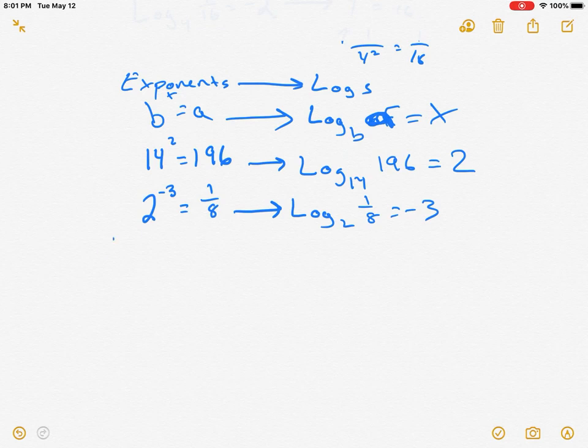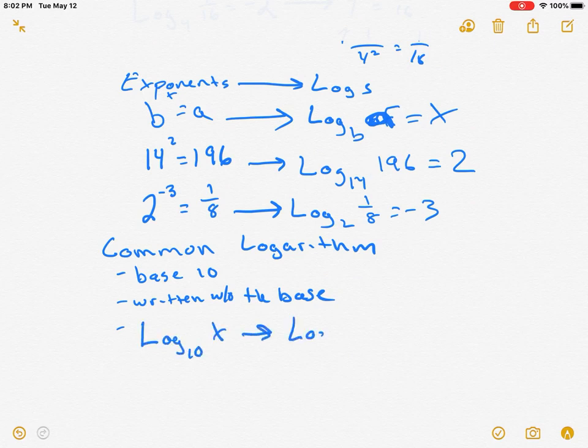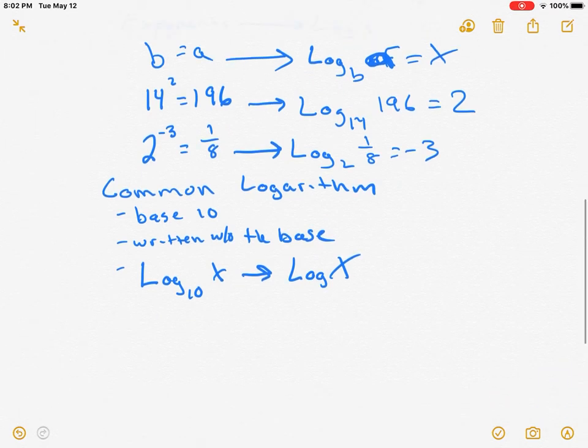Now, we have something that is called a common log or a common logarithm. All right? You're like, what is that? A common log is a log with a base 10. Okay? And it can be written without writing the base. Right? So, base 10 written without the base. So, if we have log base 10 of x, we just write it as log x. There's no need to put the base 10 in there. It's given, if you see log with no base, it's given that the base is 10. Okay?